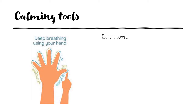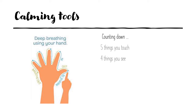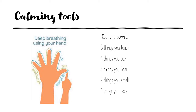A second common calming tool is called counting down — again, easily taught to children. Touch five things within your reach, identify four things you see, three things you hear, two things you smell, and one thing you taste.